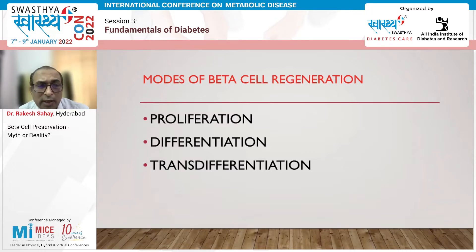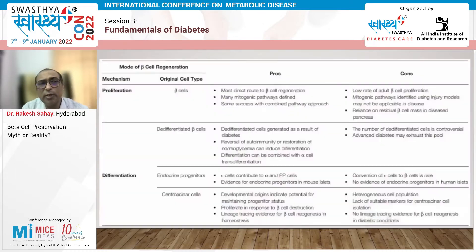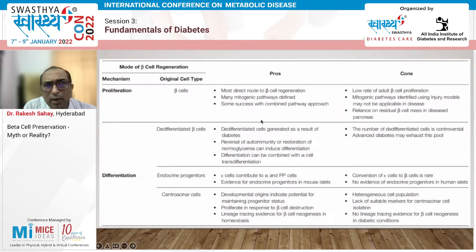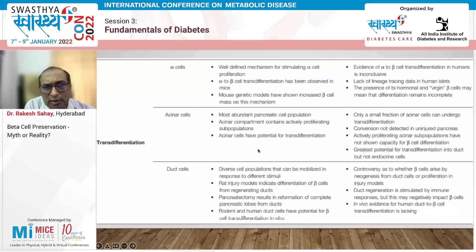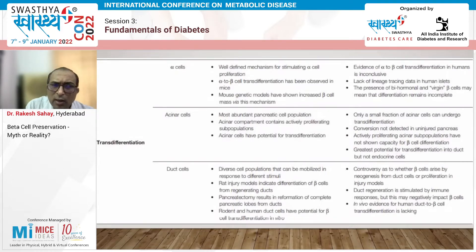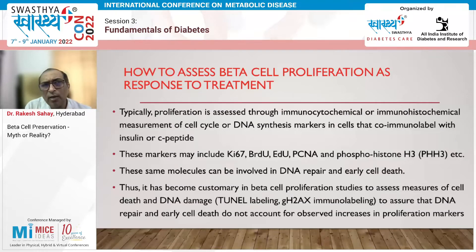This slide shows the pros and cons of proliferation, differentiation, and trans-differentiation — each has its own advantages and disadvantages, which is too extensive to cover fully in 15 minutes. I'll focus on beta cell proliferation today. You can assess proliferation using immunocytochemical and immunohistochemical measurement of cell cycle markers or DNA synthesis.